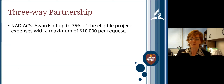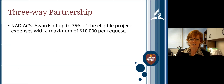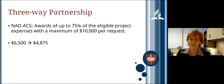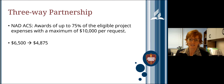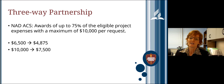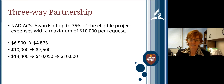The seed grant cannot be used for operating expenses such as utilities, purchase of a building, salaries, or rent. Only eligible costs will be factored into any awards. The ACSC grant is a three-way partnership. The NAD ACS will award funding of 75% of eligible project expenses, with a maximum of $10,000 per request. For example, if your budget contains $6,500 of eligible expenses, the maximum award you could receive is 75% of that amount, which is $4,875.